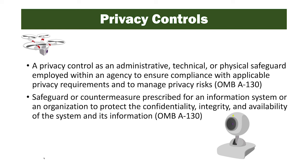A privacy control is an administrative, technical, or physical safeguard employed within an agency to ensure compliance with applicable privacy requirements and to manage privacy risks — from OMB A-130. A security control is defined as a safeguard or countermeasure prescribed for an information system or organization to protect the confidentiality, integrity, and availability of the system and its information, also defined by A-130.